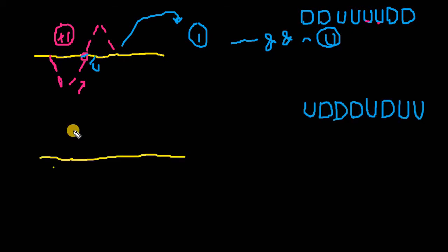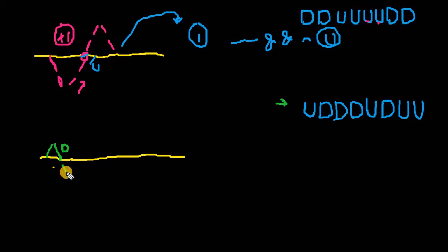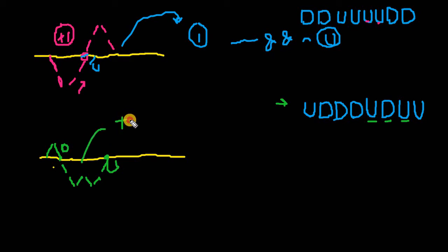In the second example, the first character is 'U', going upward. Then a 'D' brings us back to surface level, but since we're arriving from above (not from below), we don't count it as a valley. Next we go down twice, up once, down once, then up twice — at this point we reach surface level coming from the 'U' direction, so this is counted as one valley. The total valley count for the second example is also one.